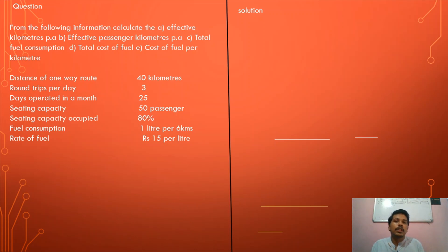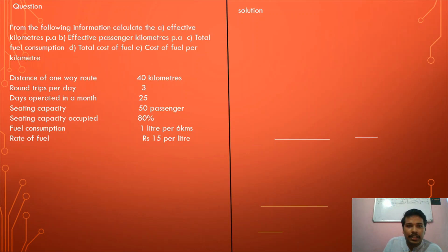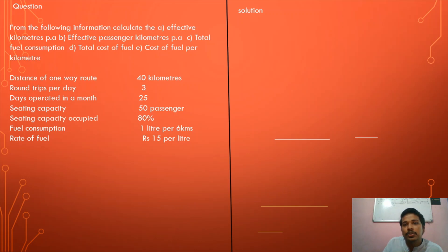We have a problem with transport costing. We are learning about transport costing. We need to take a few steps and formulas, a few miles of travel, and a few steps and procedures. Once we understand that, we can solve all the questions. We are going to do the cost unit — this is a small question — we are going to do the transport cost and do the practical questions.